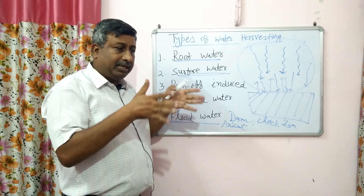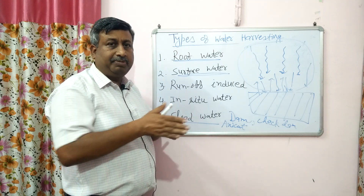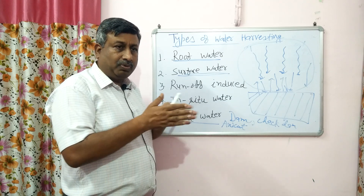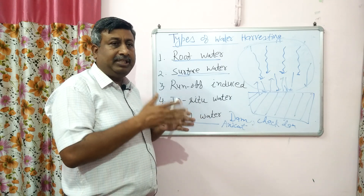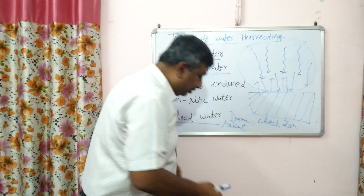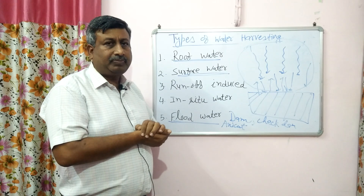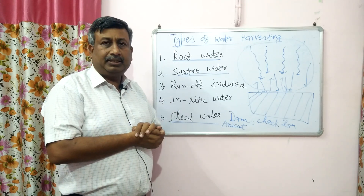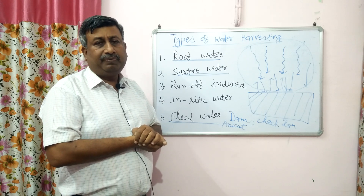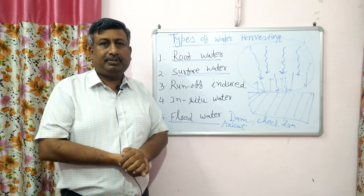In summary: in-situ water harvesting conserves water at the place where rain falls, using inter-row water harvesting and inter-plot harvesting. Flood water harvesting uses check dams. In all cases, water harvesting is the collection, storage and conservation of rainfall water through the collection of runoff. These are the different types of water harvesting. Thank you very much.